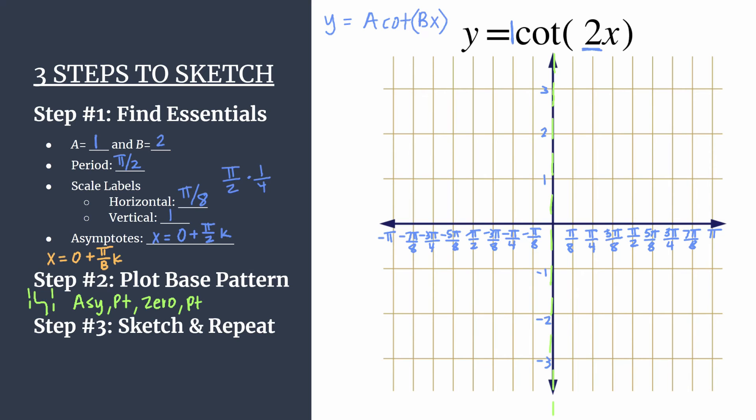So all you have to do is plot this at your first horizontal tick mark, moving to the right, so at pi over eight. And the y-coordinate value will be a, so it'll be one. So here's our first curve shaping point, that upper curve shaping point.